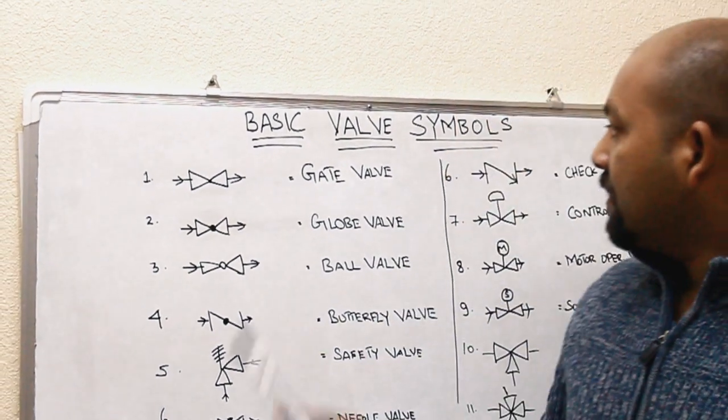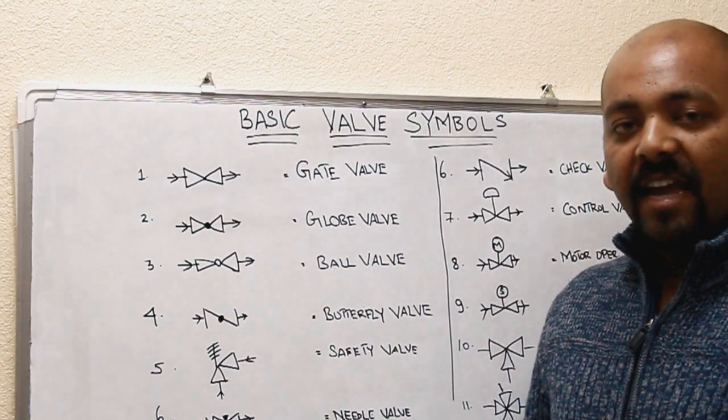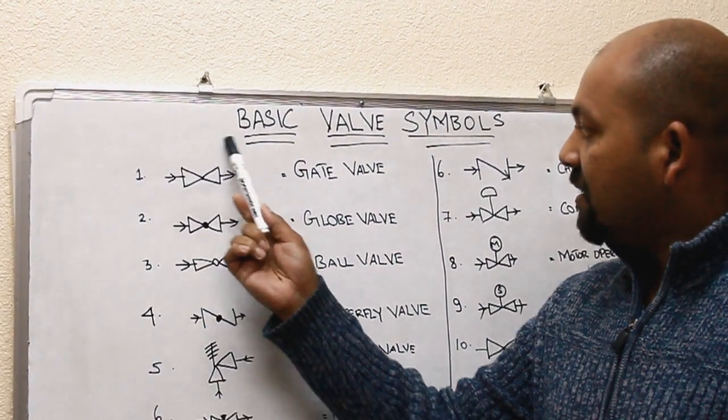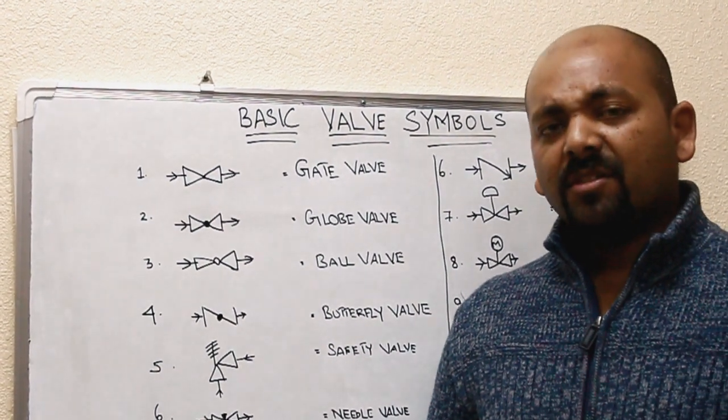So let's start. Number one, gate valve. The gate valve symbol is simple, like this. The purpose of the gate valve is open-close, open the flow, close the flow.